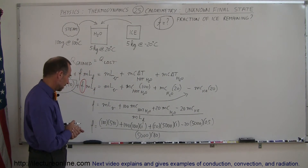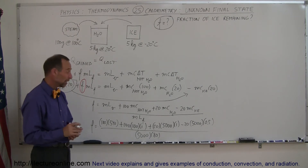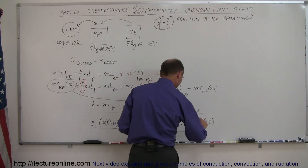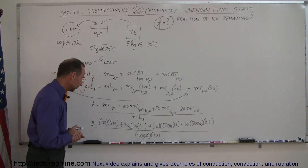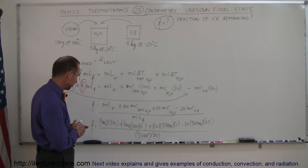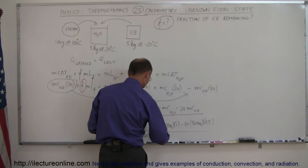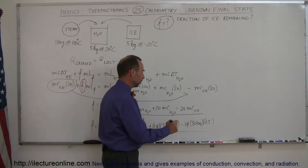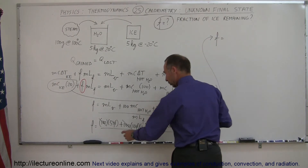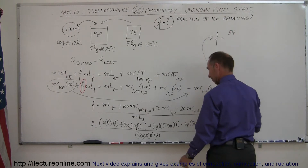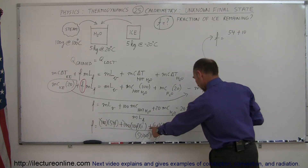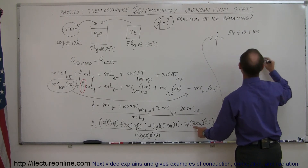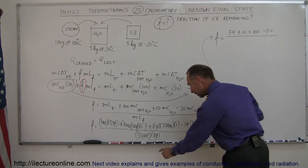Every term has at least two zeros, so I'll divide every term by 100 to simplify. Then I can remove another zero from each term as well. Rewriting with smaller numbers: the numerator becomes 54 plus 10 plus 2 times 50 (which is 100), minus 2 times 0.5 times 50 (which is minus 50). The denominator is 50 times 8, which is 400.